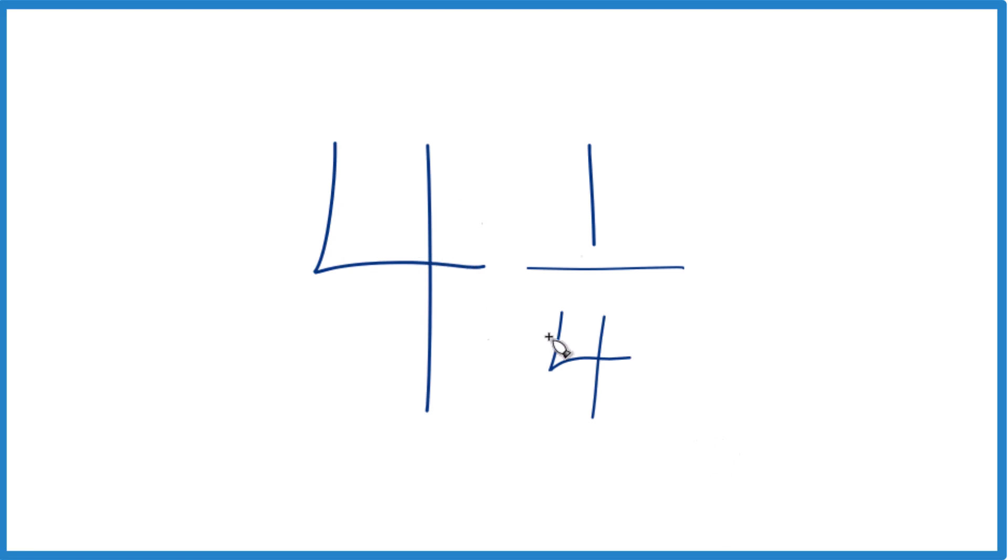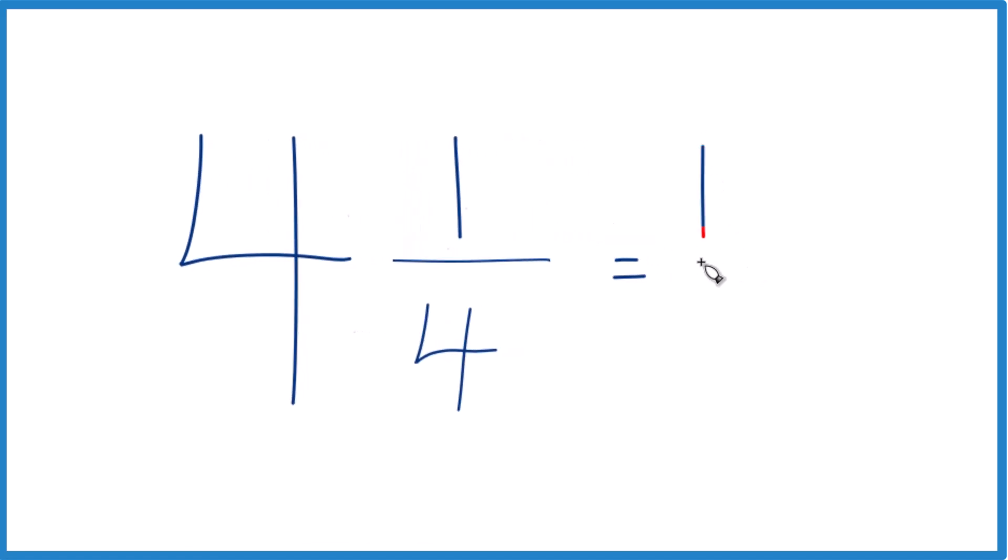4, that's the whole number, times 4. 4 times 4 is 16. 16 plus 1, that equals 17. So that becomes the numerator. Bring the 4 across, and that's it.